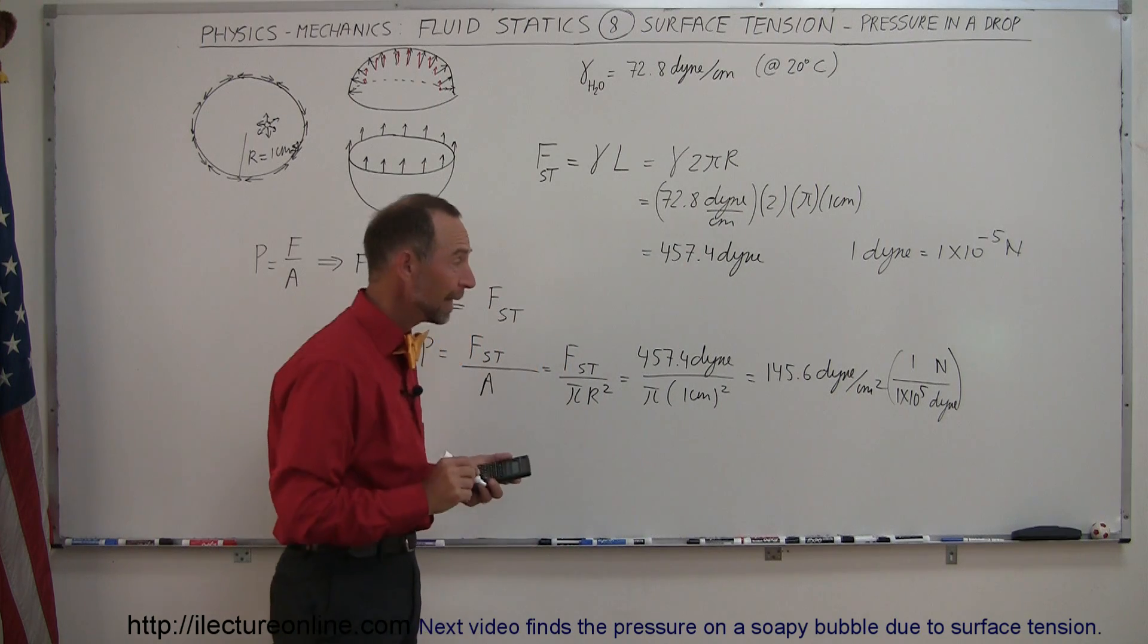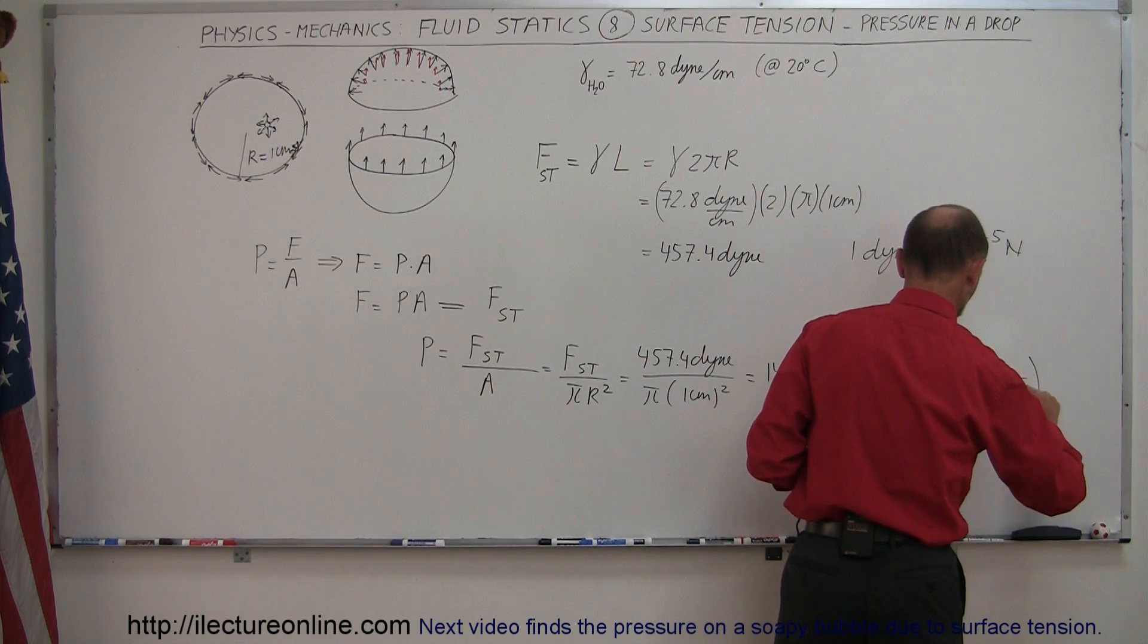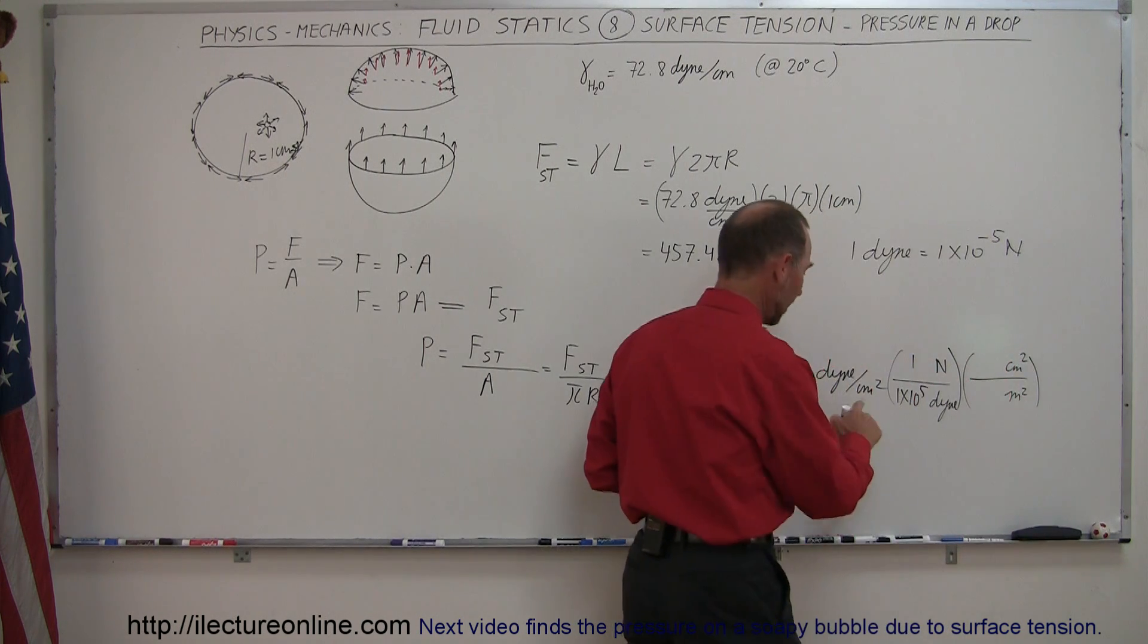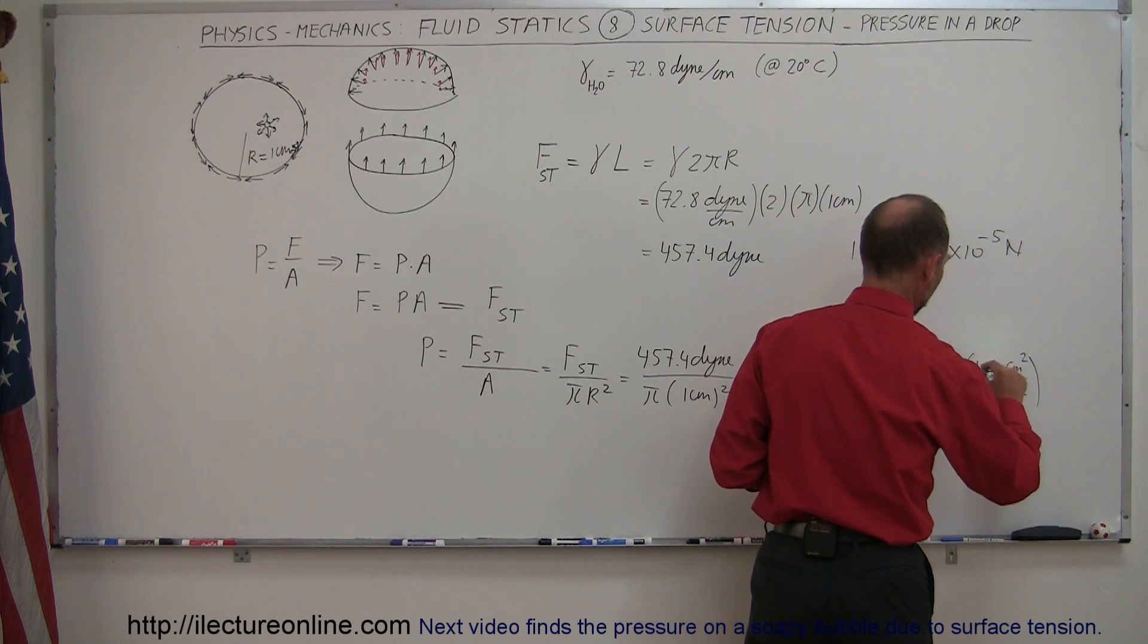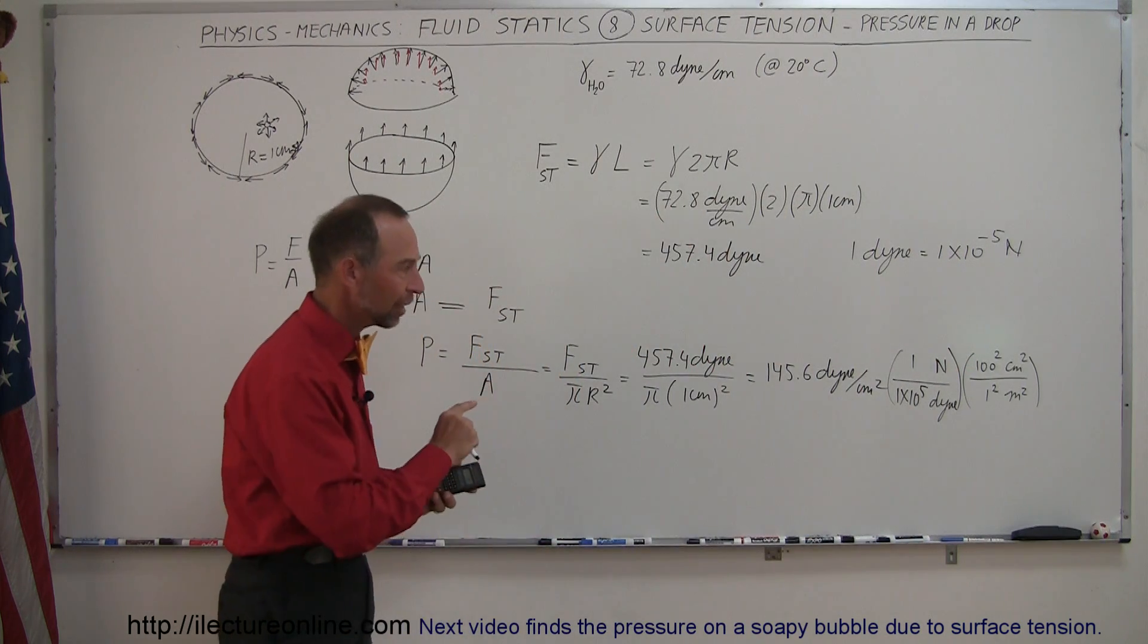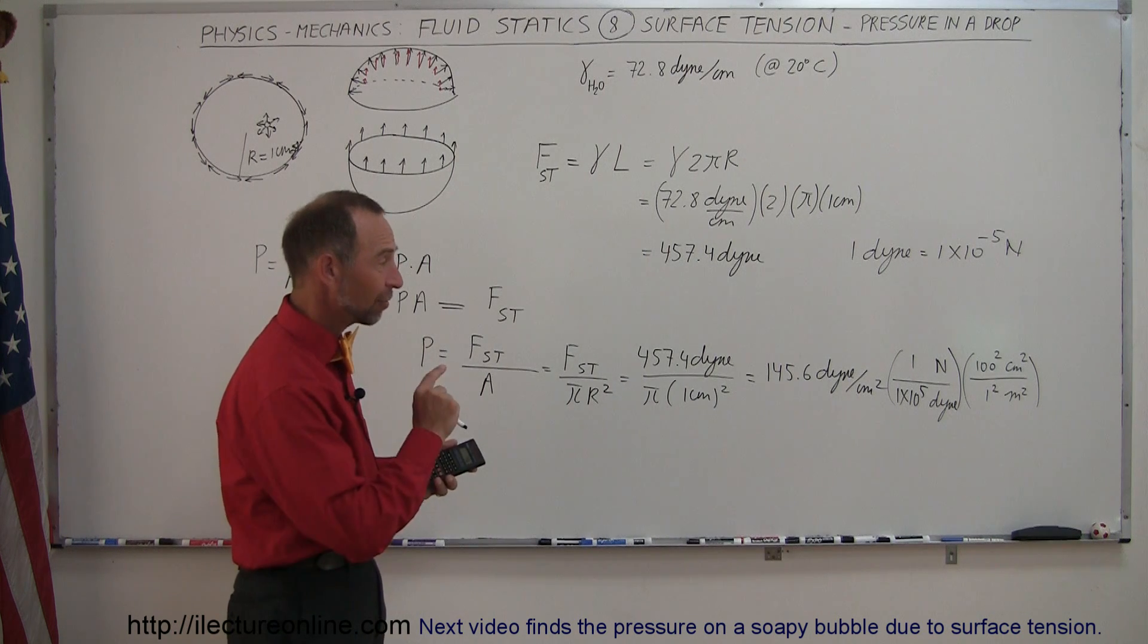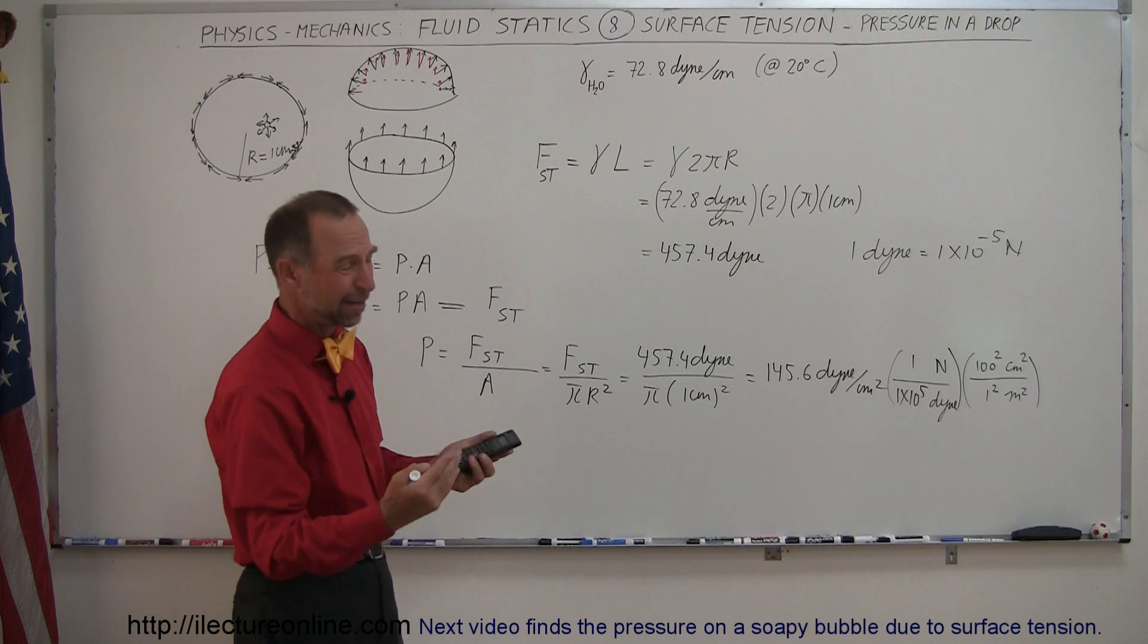And then we have to account for the square centimeters. So we want square meters at the bottom, square centimeters at the top, so they will cancel out. And so one meter is 100 centimeters, but one square meter is 100 square centimeters. All right, so now what we get is to convert that to newtons per square meter, which is pascals, of course, we have to multiply times 100, times 10,000, divide by 100,000, it's like dividing by 10.